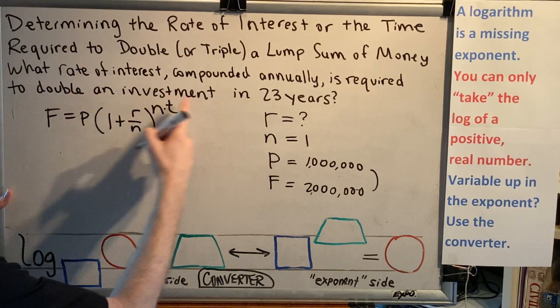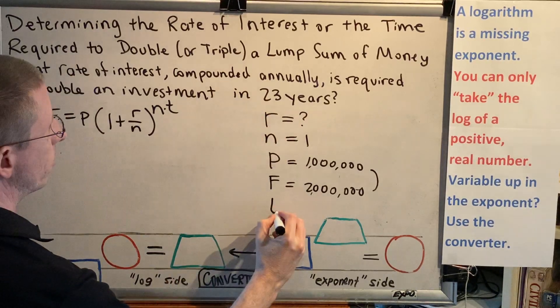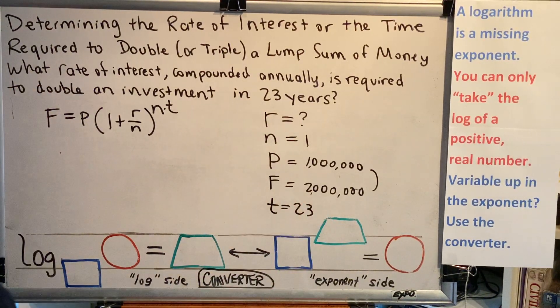Finishing the sentence, to double an investment in 23 years. So T is 23. Okay, great.